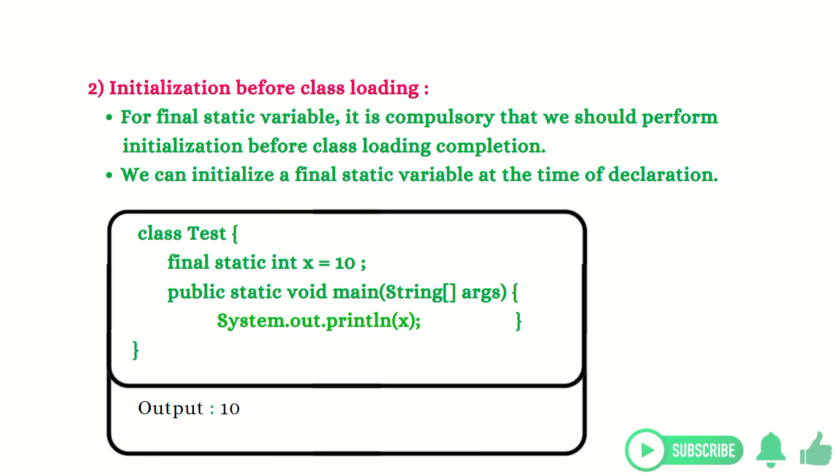Now on the screen, you can see the same code with a little modification. We initialize the final static variable at the time of declaration only. And that's why in output you can see the same value.